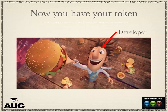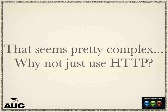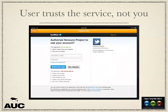Now you've got your token. You can request anything you've been authenticated to — including hamburgers. You might ask: why not just use HTTP? One reason is the limited access I mentioned. Also, the user probably trusts the service they've already signed up to more than they trust you — they've probably just downloaded your app.